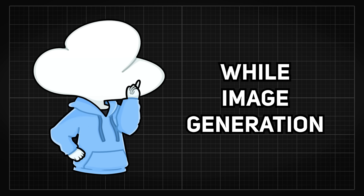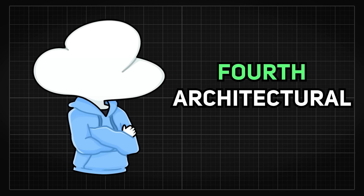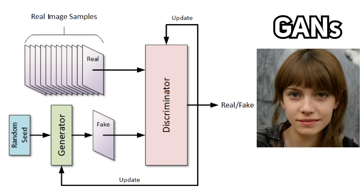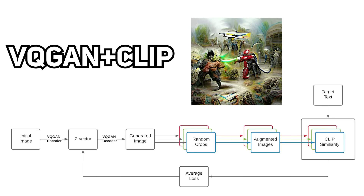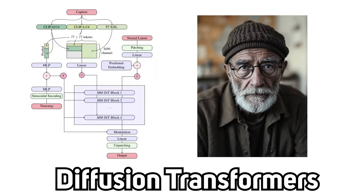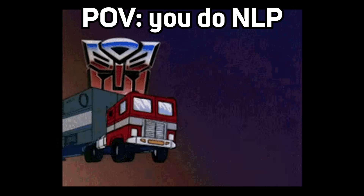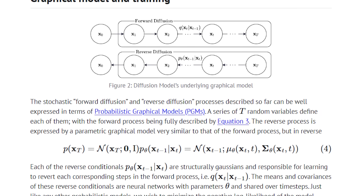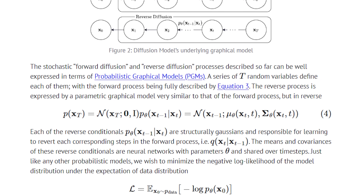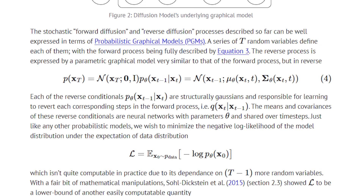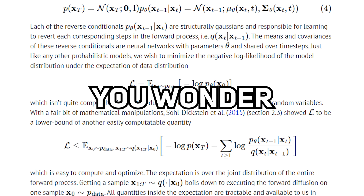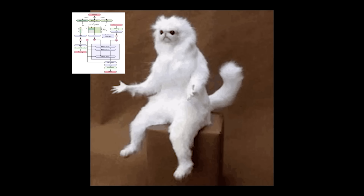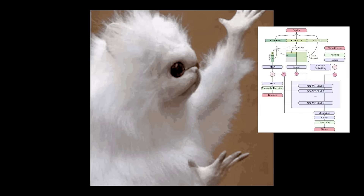While image generation is currently on its fourth architectural evolution — from GANs, VQGAN plus CLIP, latent diffusion, and now diffusion transformers — language modeling has been sitting on transformers this whole time, with each and every one of the image generators being a mathematical feat that makes you wonder how in the world did people come up with this.